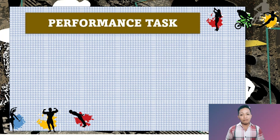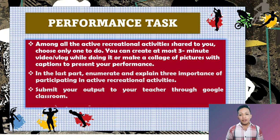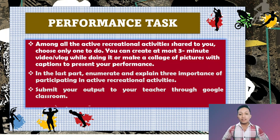Your performance task: among all the active recreational activities shared, or others you find online, choose one to do. Create at most a three-minute video or vlog while doing it, or make a collection of pictures with captions. In the last part, enumerate and explain three importance of participating in active recreational activities, and submit your output to your teacher through Google Classroom.